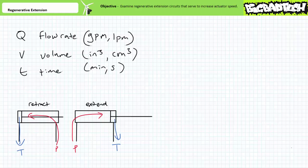Good day and welcome to Big Bad Tech. I'm your instructor Jim Pytel and today's topic of discussion is regenerative extension. Our objective is to examine regenerative extension circuits that serve to increase actuator speed.